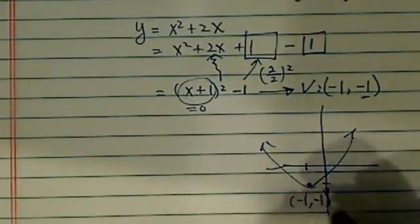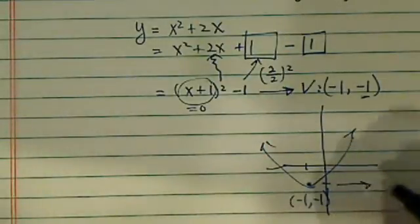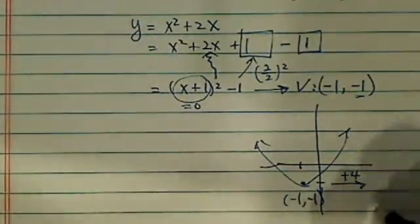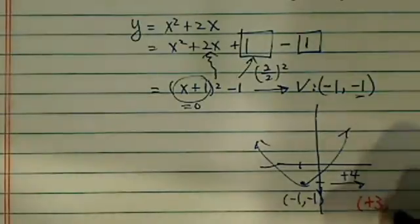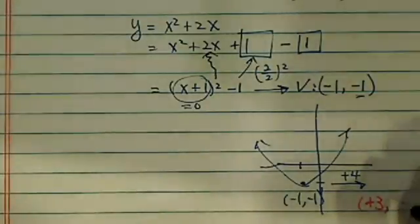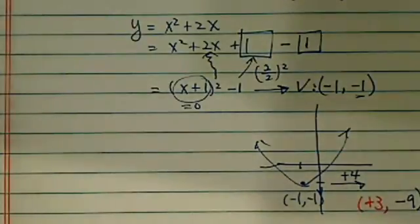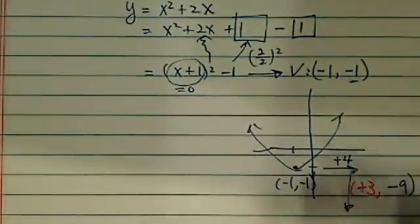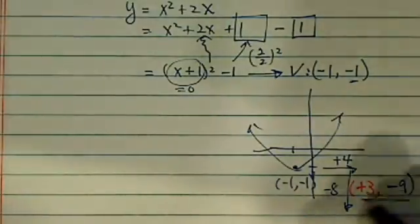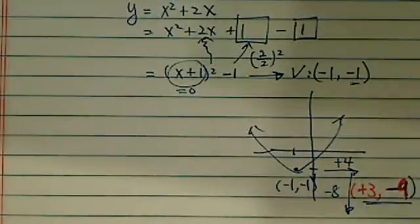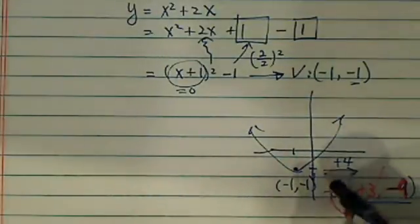Now we were told the vertex went 4 units to the right, so the new graph will have x = 3 for the vertex. Then it went down 8 units, so y will be -9. So it's going to go over here and then go down 8 units. The new vertex is at (3, -9). Let's sketch the new graph with the vertex going up like that.